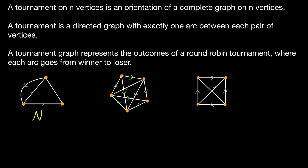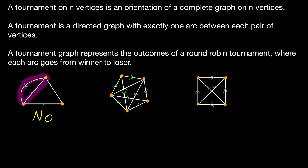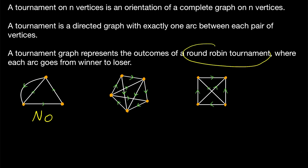The answer is no. A tournament is an orientation of a complete graph, and a complete graph has one edge joining each pair of vertices. In an orientation, we assign one direction to that one edge. The problem here is that we've got two directions going between the same pair of vertices. There has to be exactly one arc between each pair — not two. Thinking of this as modeling a round-robin tournament, this would mean one team beat the other team, but also that other team beat the first team. Only one team can win each match; there are no draws. That's why this is not a tournament.